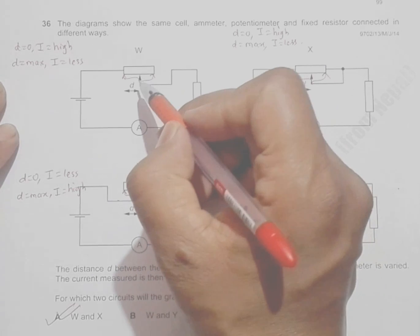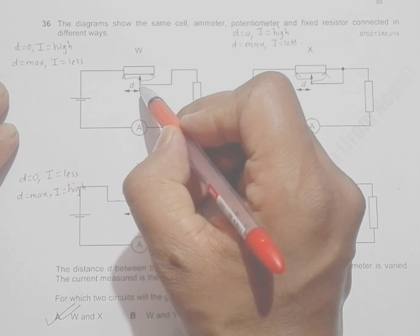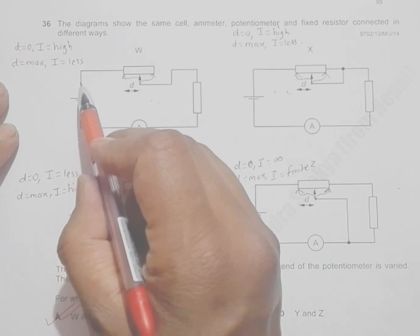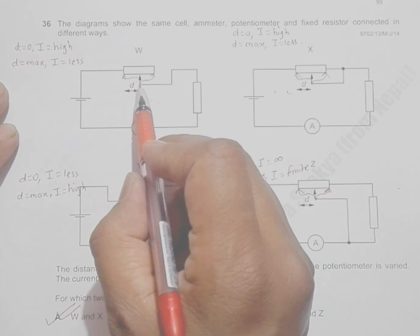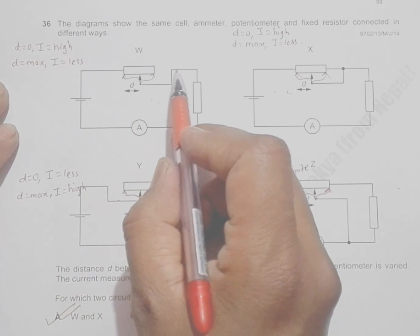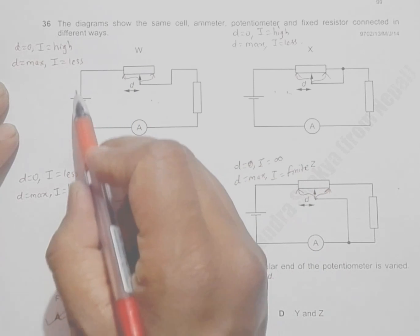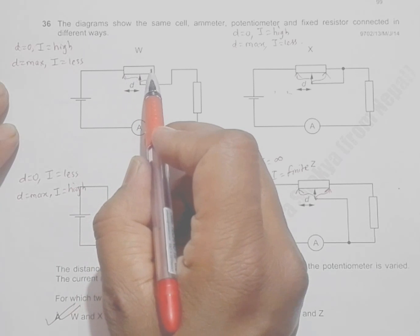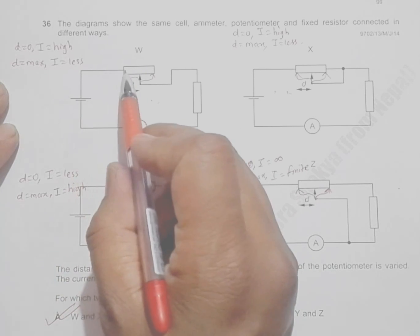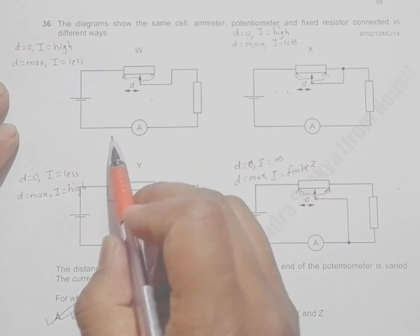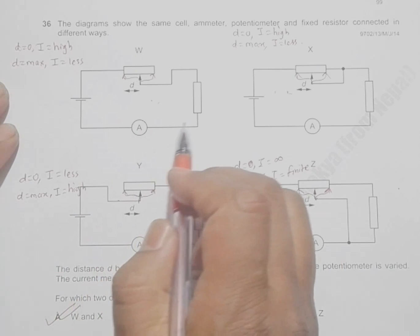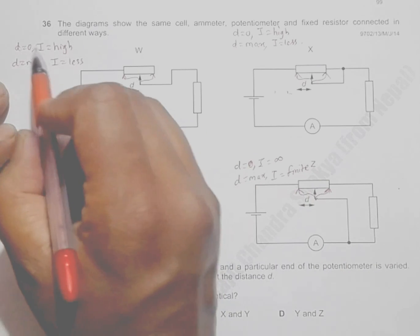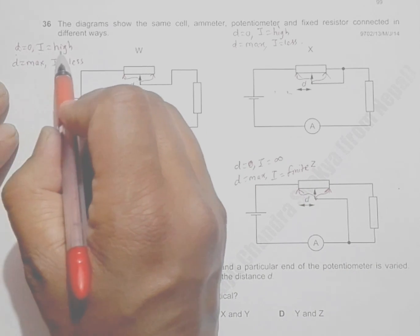In the first diagram, if the sliding contact is at the left end (d=0), current flows only through this one resistor — the potentiometer portion is bypassed and useless. Since the resistance is less, the current should be high. So when d equals zero, current is high.